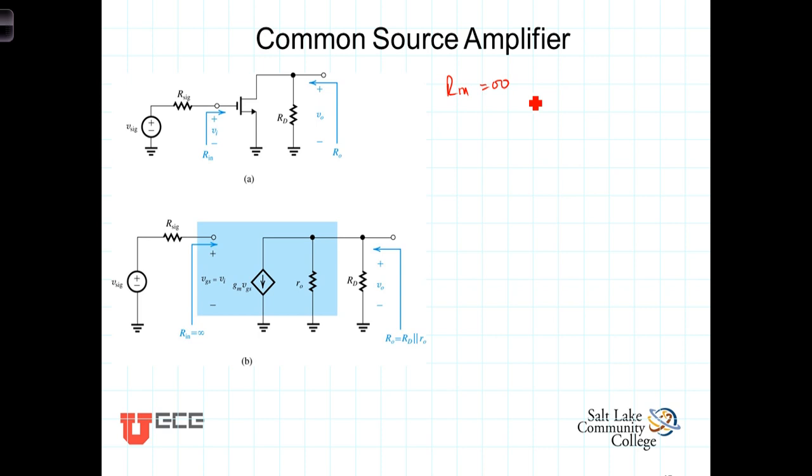Because no current is going into it, the input resistance to the amplifier, VN, is equal to just the signal voltage itself. There is no voltage division taking place between the input resistance and the internal resistance of our signal source.